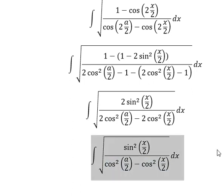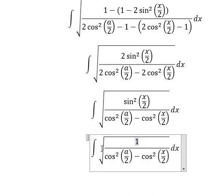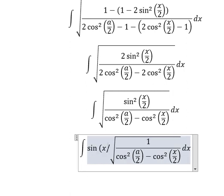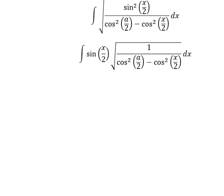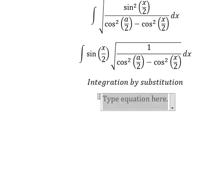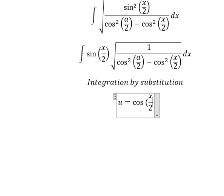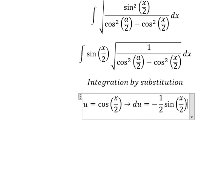Next, the square root of sine of (x/2) squared. We put this one outside and we have sine of x over 2. Now we can use integration by substitution. So I will put u equal to cosine of x over 2. After that, we need to do the first derivative for both sides, and we have du equal to negative 1 over 2 · sine(x/2) dx.